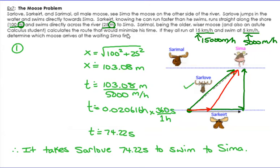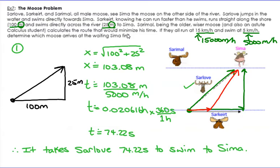Sarlav swims directly across. It was 100 meters across and 25 meters up to Sima, forming a right-angle triangle. Using the Pythagorean theorem, the hypotenuse is about 103 meters. Dividing by his swim speed and converting to seconds gives approximately 74.22 seconds — that is Sarlav's time.